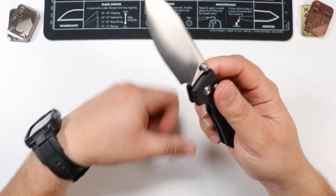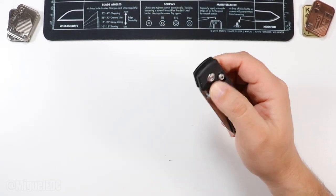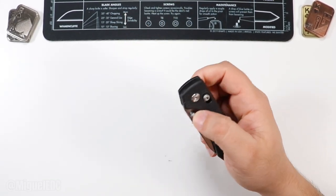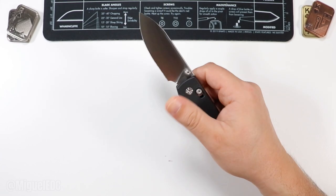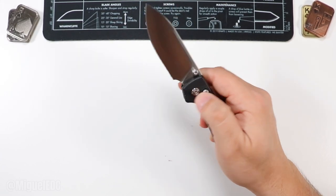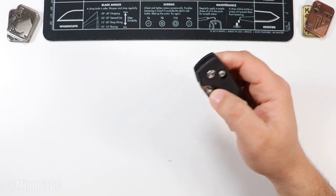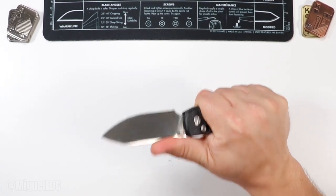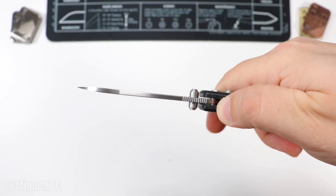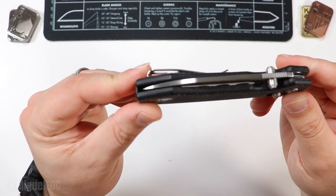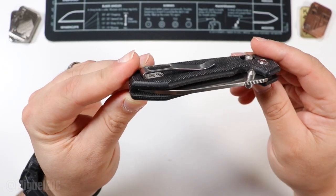Well, there it is, guys. There is the Vosteed raccoon. A quick unboxing and first impressions on this bad boy. I gotta tell you, the action on this thing, it feels pretty good out of the box. It's nice and comfortable, even when bearing down on it. It's nice and jimped right here. The alignment is pretty good, too. Take a look right there. You guys be the judge.